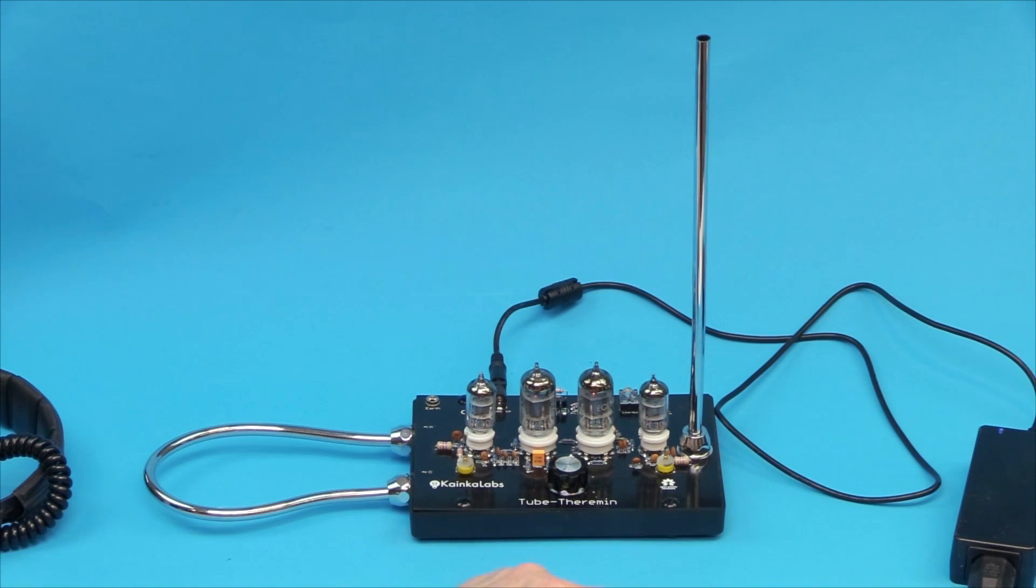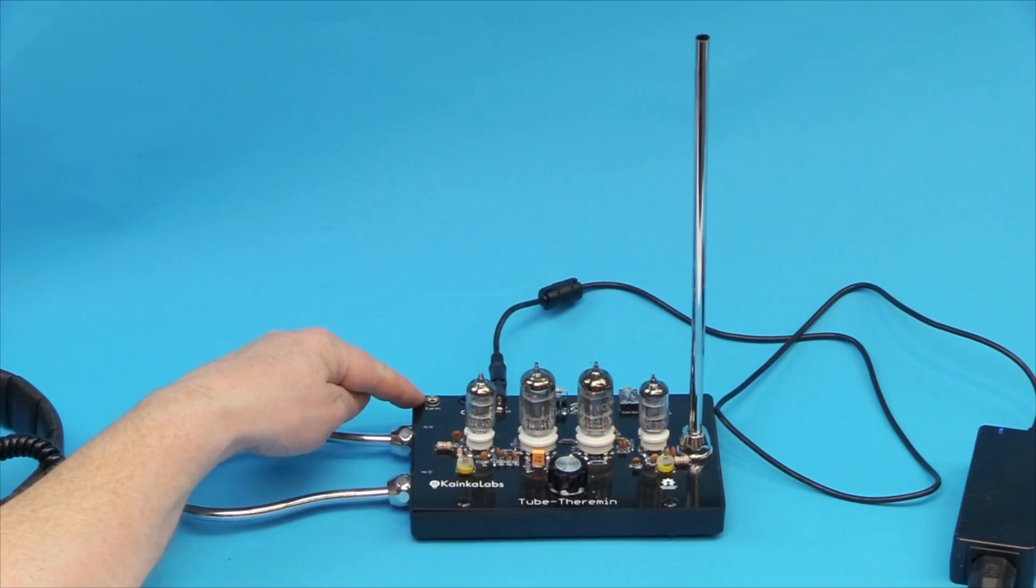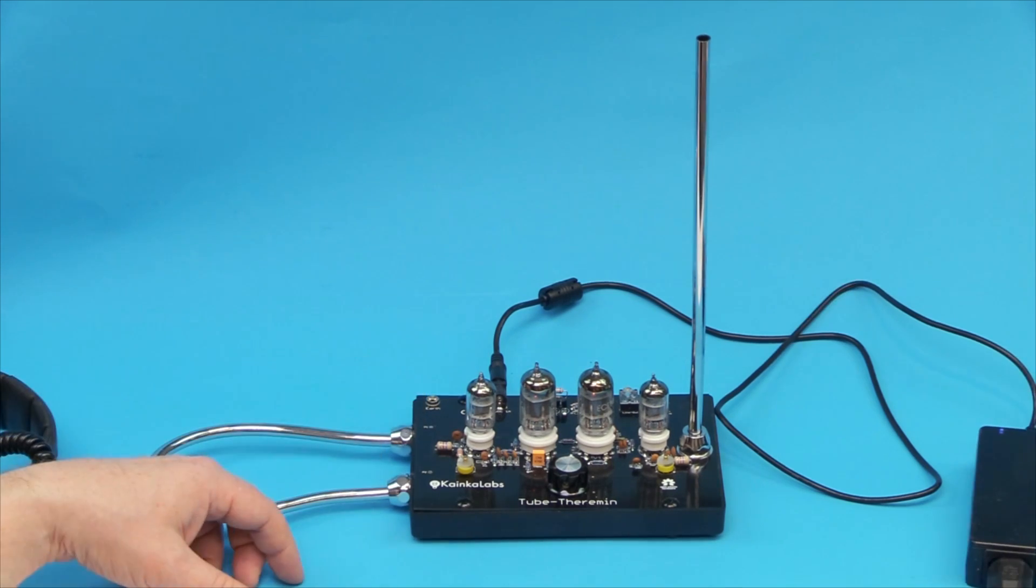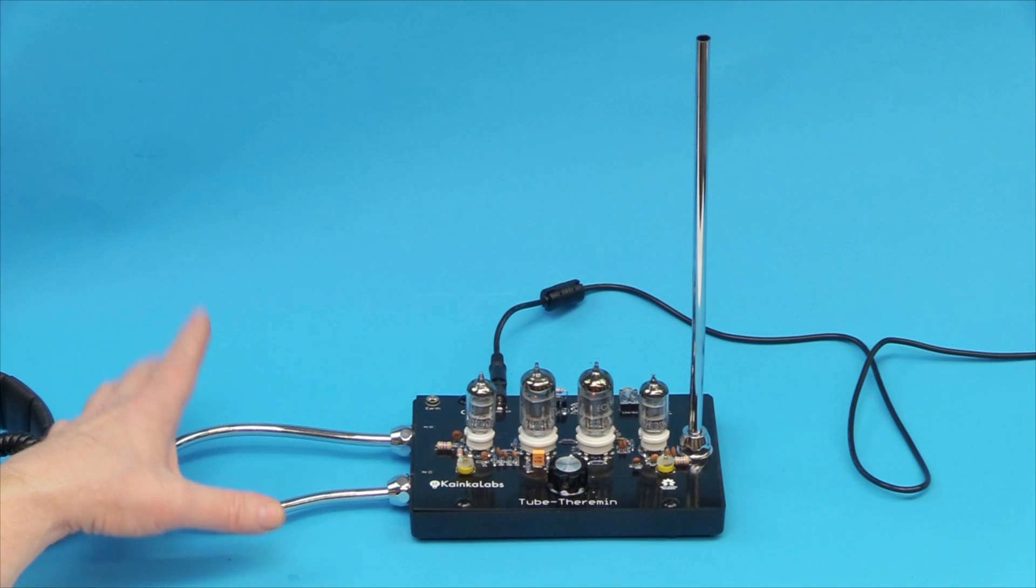It might even be that your power outlet does not have a connection to protective earth. Thereby we have this four millimeter banana jack here to make a separate connection to earth in case this is the situation at your home. So, I hope you like this and find interest in the tube theremin. And now, as promised, let's make some sound with it.